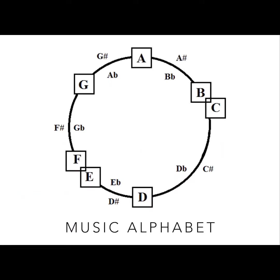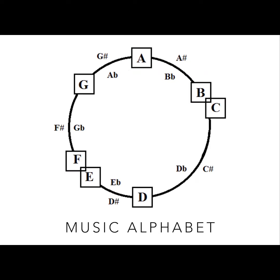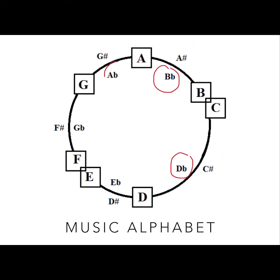Here we see our musical alphabet. The natural notes are in the boxes: A, B, C, D, E, F, G — those are our natural notes, no sharps, no flats. The outer part of the circle shows sharp notes, so we have A sharp between A and B, C sharp between C and D, and so forth. On the inner part of the circle we have our flats: B flat between A and B, A flat between G and A, and so forth.